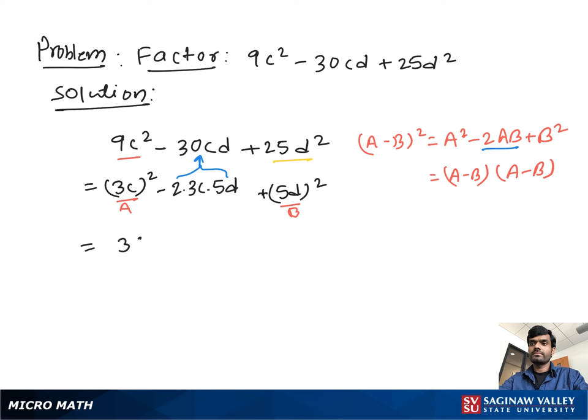Now it looks like a perfect a² minus 2ab plus b², so you can write this as (3c - 5d)², or it can also be written as (3c - 5d) times (3c - 5d), and this is our final factor.